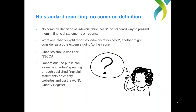There are real challenges with accounting standards not being able to demonstrate consistency of administration costs — and it's all legitimate. Charities should consider NSCOA — the National Standard Chart of Accounts — which is an attempt to standardise the way charities can report a whole range of costs, not just administration costs, according to a more streamlined way.